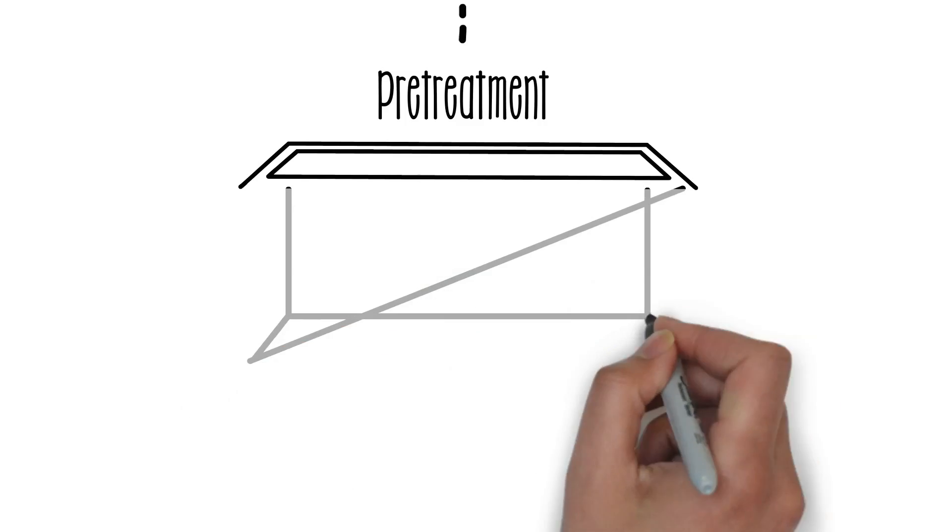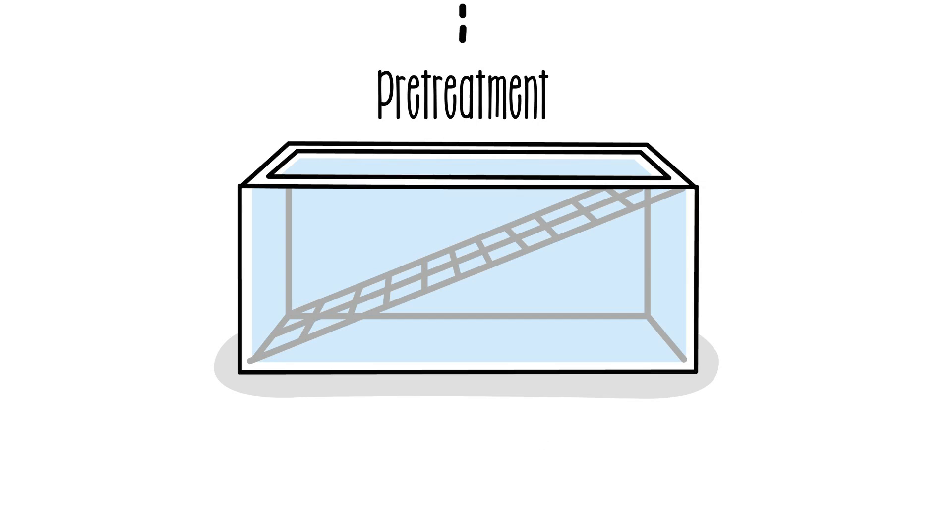The first step is a pretreatment where large debris is removed by a grid screen and smaller waste is collected with a fine filter.